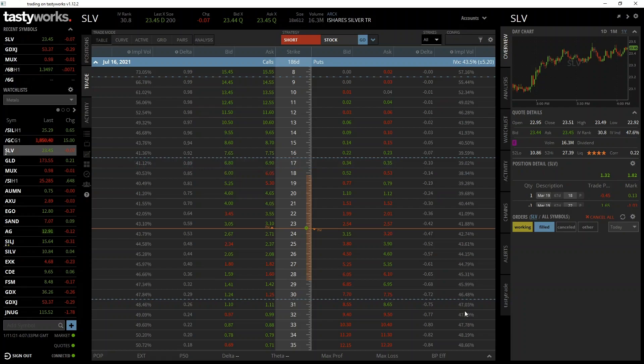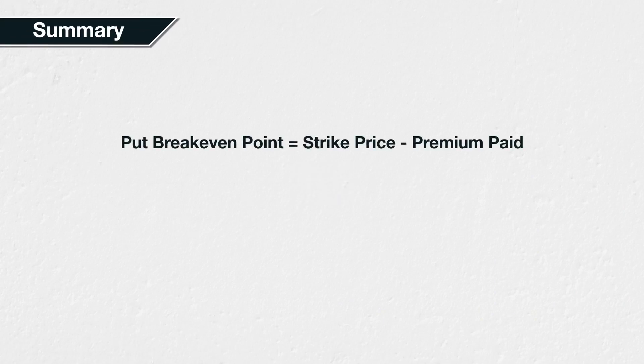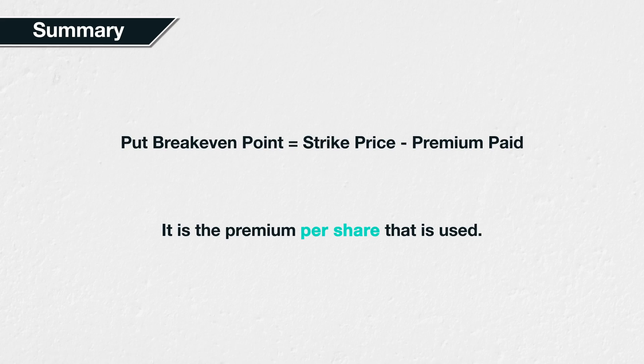We will be moving on to the differences between buying and selling a put option later in the section. It's worth mentioning briefly now, though, that the break-even point for the seller of a put option is exactly the same as the break-even for the buyer of the put option. In summary, the break-even point of a put option can be calculated as the strike price minus the premium paid for the option. And remember to use the per-share value for the premium paid, not the total premium.